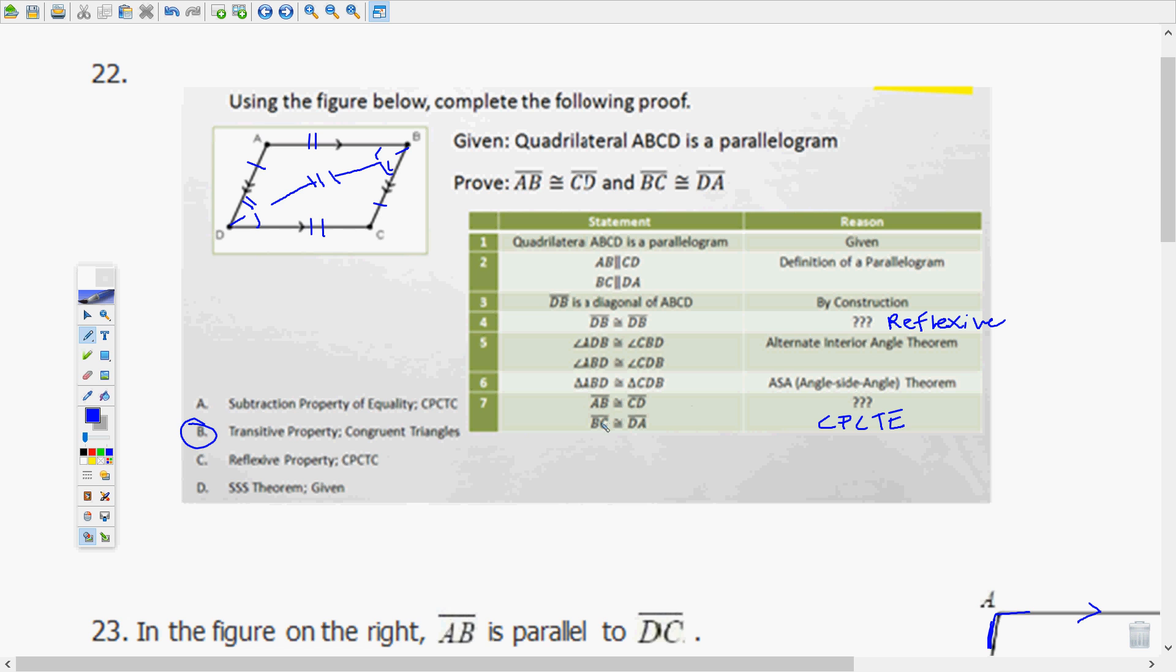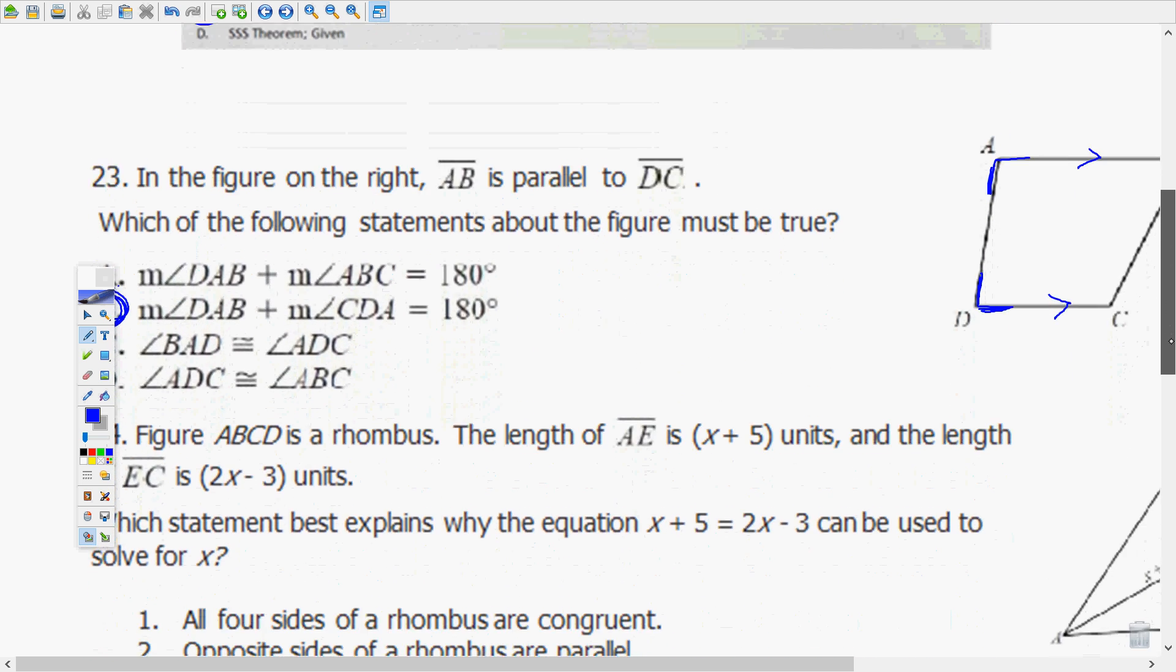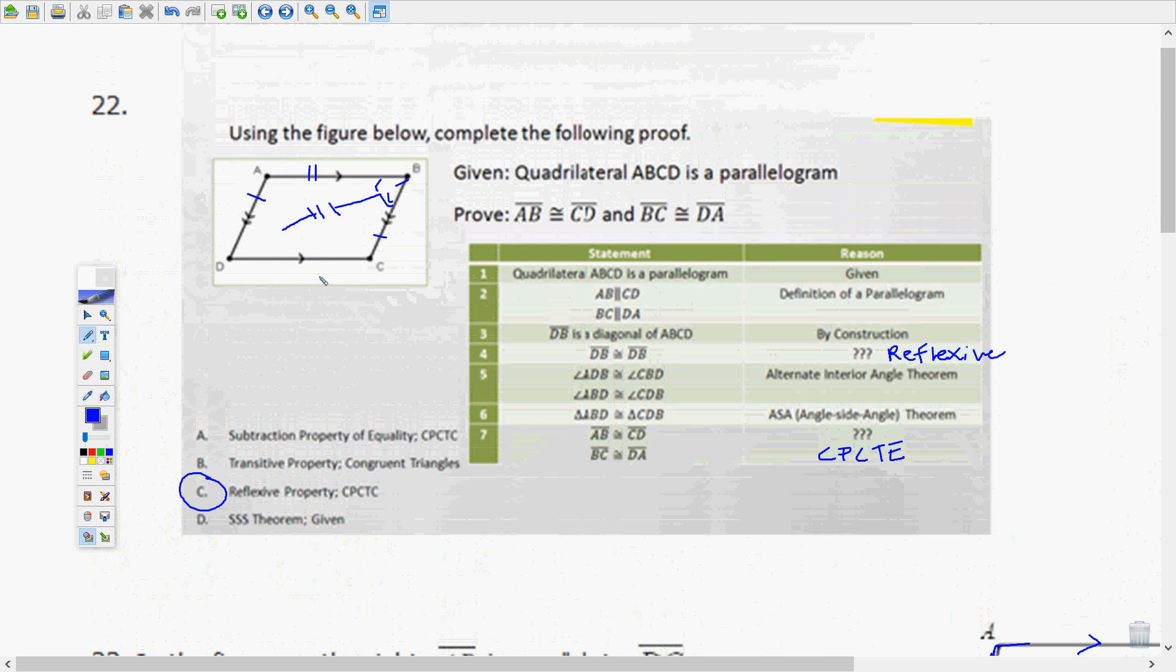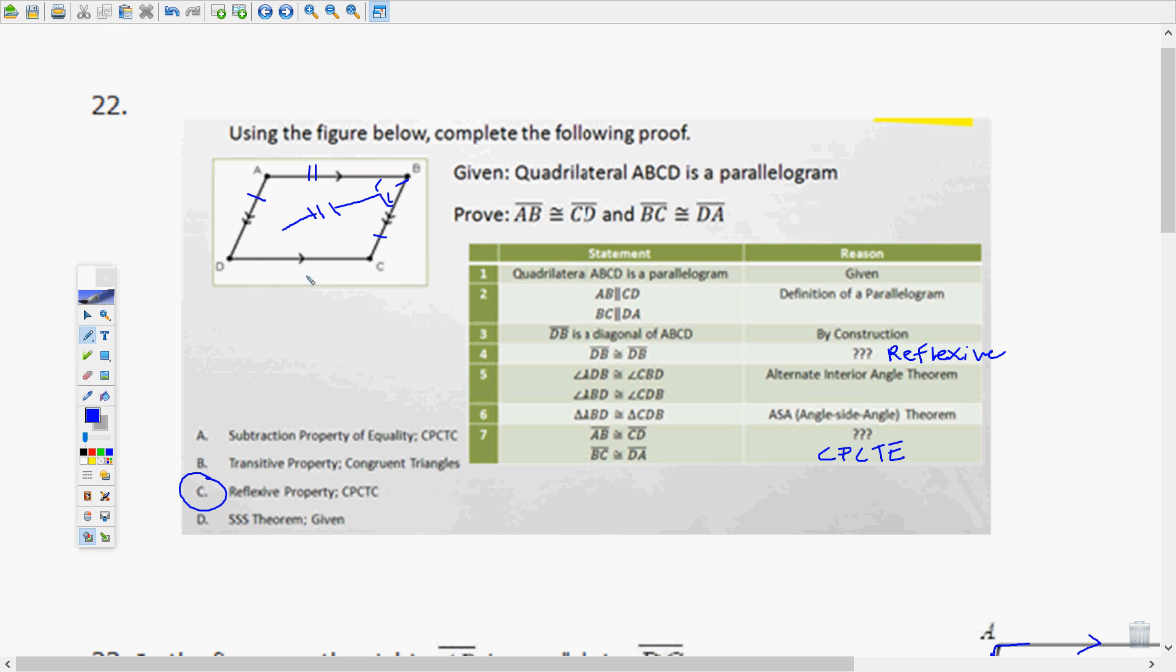Alternate interior angles are congruent, and then angle side angle, the triangles are congruent. Now anytime you have a step after triangles are congruent, it's usually going to be CPCTC, corresponding parts of congruent triangles are congruent. It is the reflexive property and CPCTC. Anytime you have congruent triangles, the corresponding parts will be congruent. And that's why AB will be congruent to CD and BC will be congruent to DA.